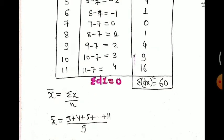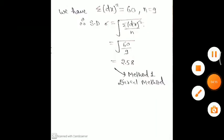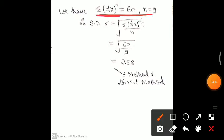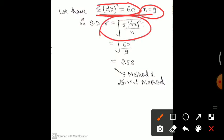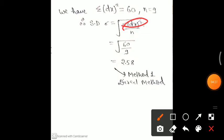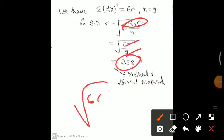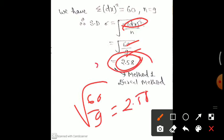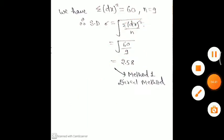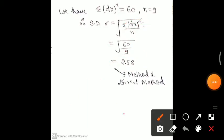Now applying the direct method formula: sigma equals under root of summation dx² upon n. Substituting: summation dx² is 60, n is 9. So 60 upon 9 equals approximately 6.67, and the square root of that gives sigma equals 2.58. This is the standard deviation by the direct method.